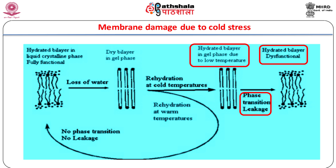Functional membranes are hydrated and in a liquid crystalline phase. On exposure to cold stress, dehydration of cells causes the membranes to go into a gel phase. On rehydration, the liquid crystalline phase is restored and the membrane becomes functional again. However, when rehydration occurs at low temperature, phase transition occurs resulting in a leaky membrane. Such cold temperature induced phase transitions in membranes affect electron transport in chloroplasts and mitochondria, causing buildup of reduced electron transport components, which bring about the generation of reactive oxygen species.